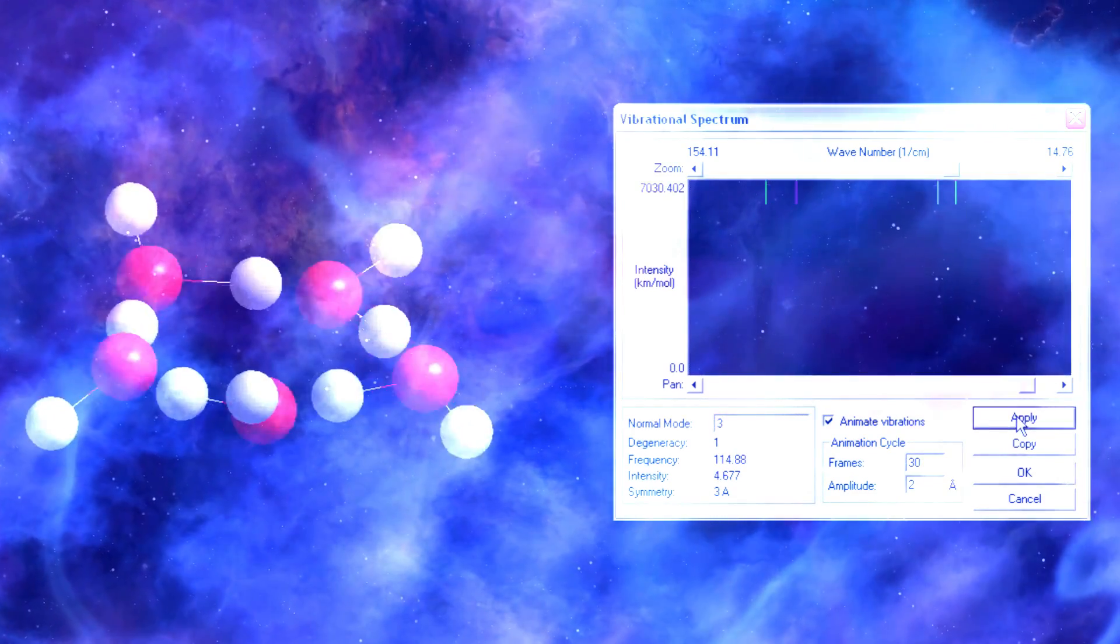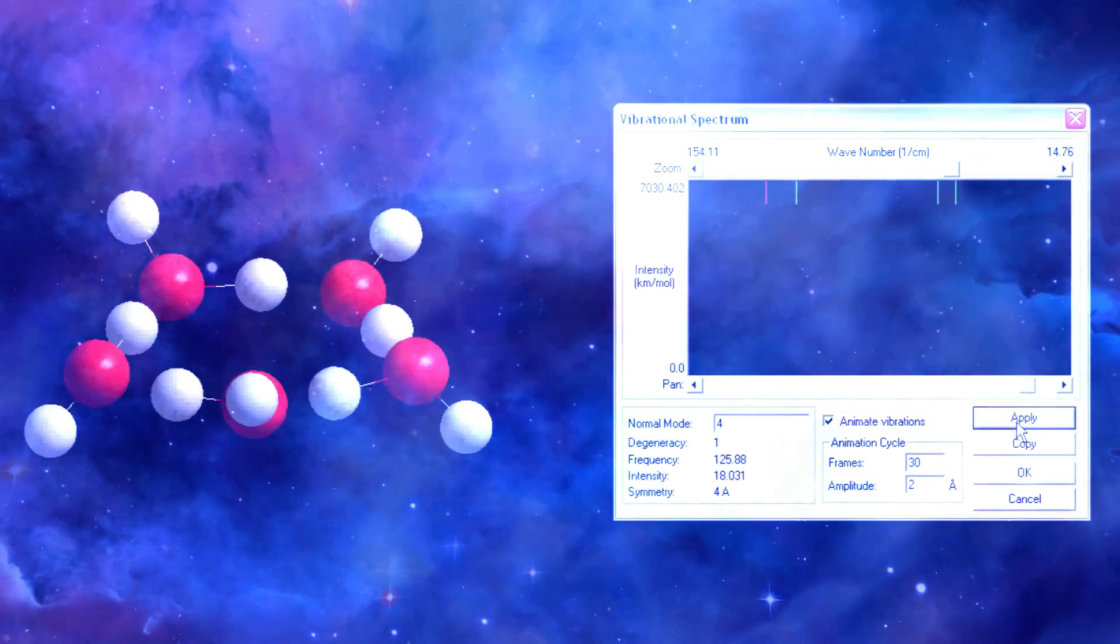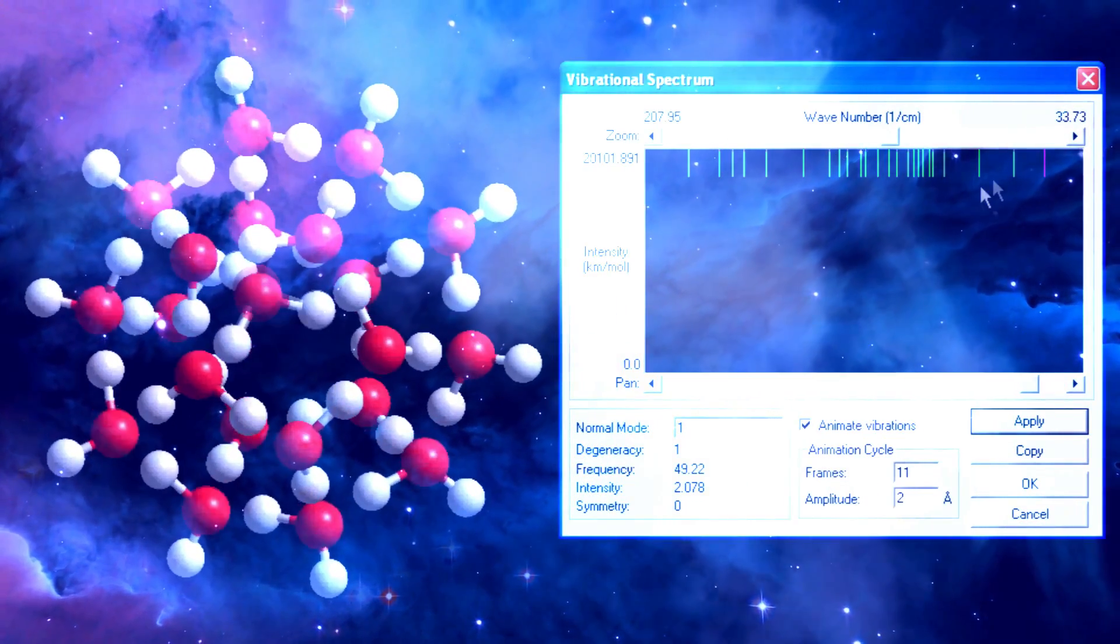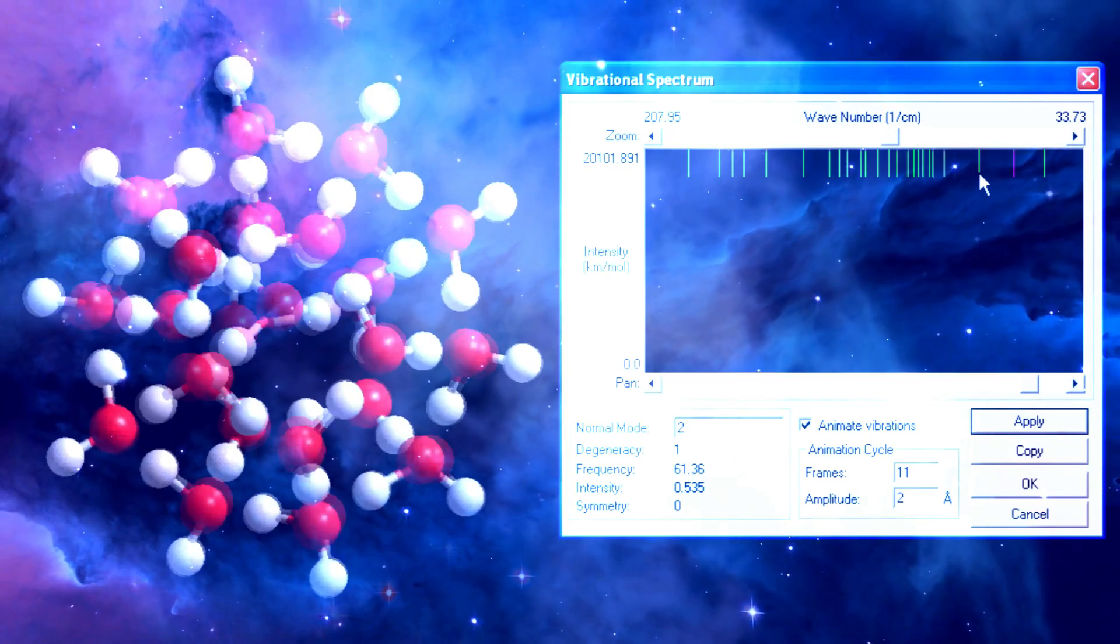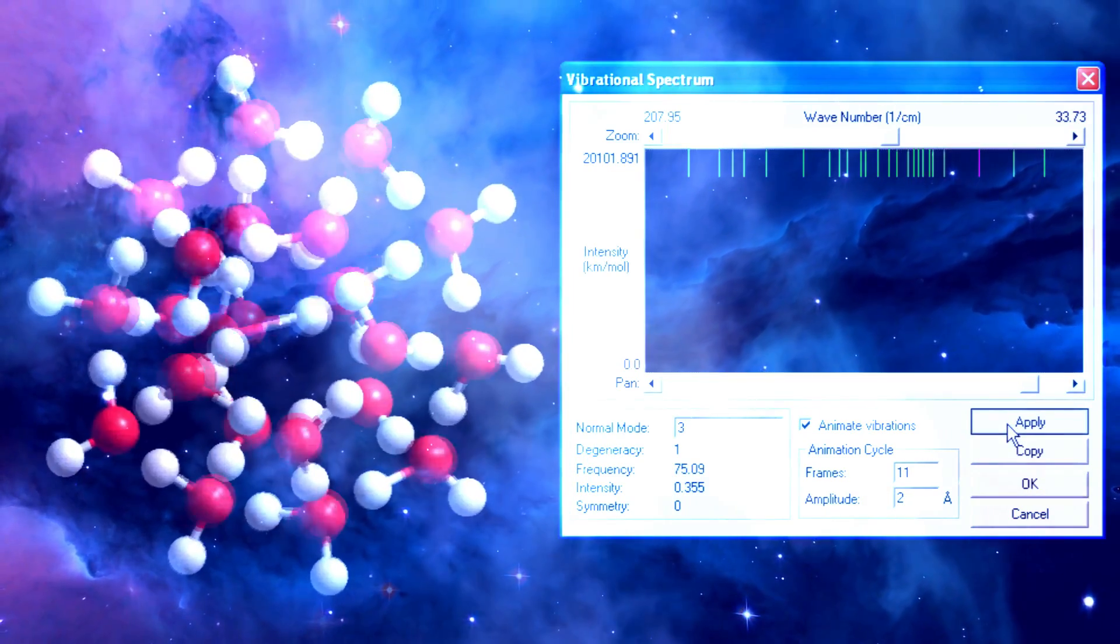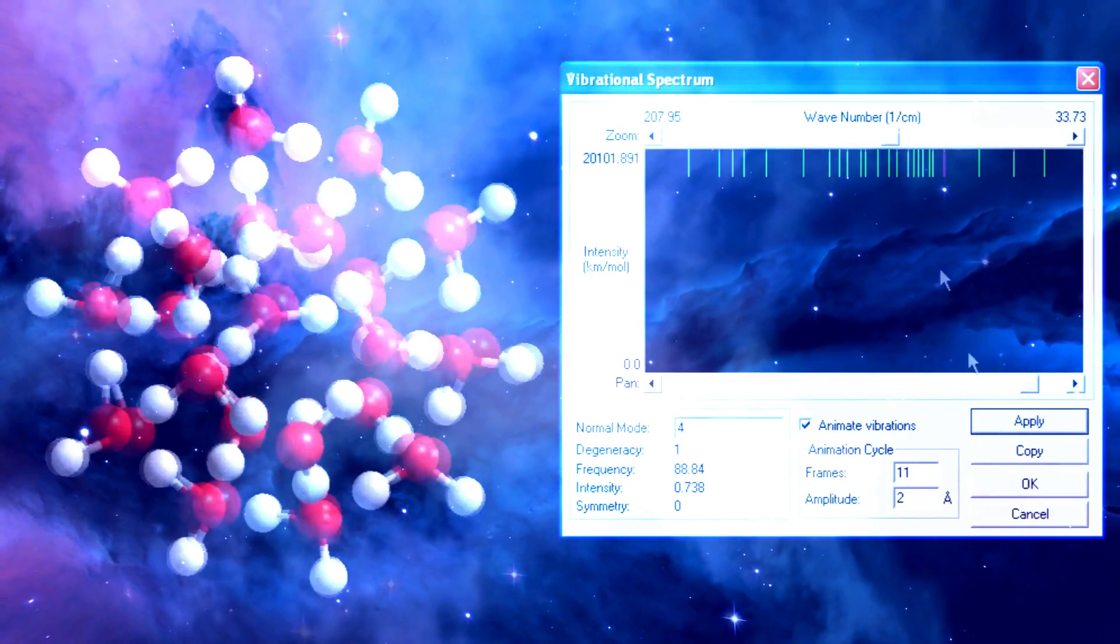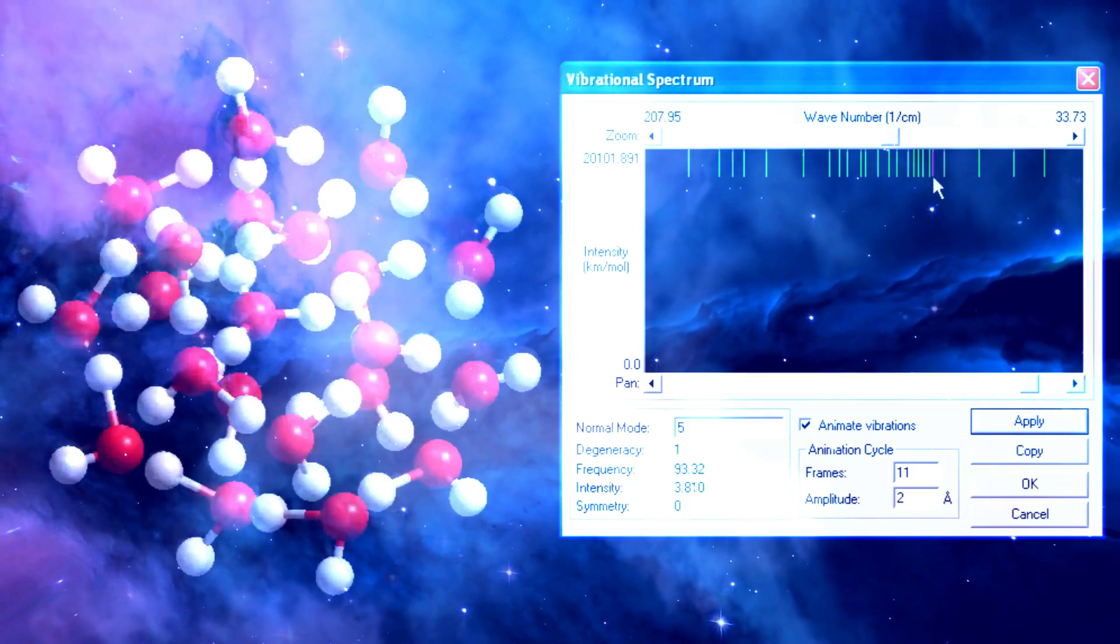Its cutoff vibrational frequency is 1.5 terahertz. The lowest entropy nanocluster formed by water pentamers is a pentagonal dodecahedral cluster. The dodecahedron contains a hydronium ion, H3O+. This water nanocluster also vibrates at terahertz frequencies.